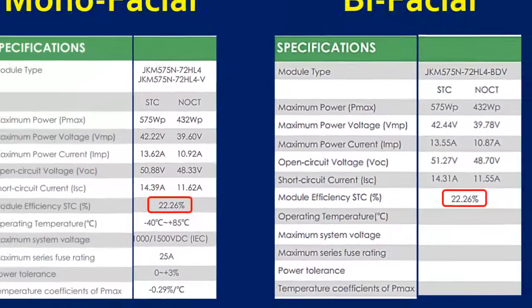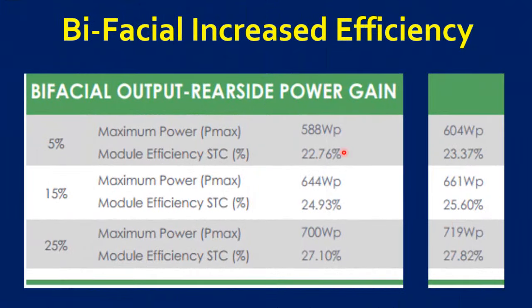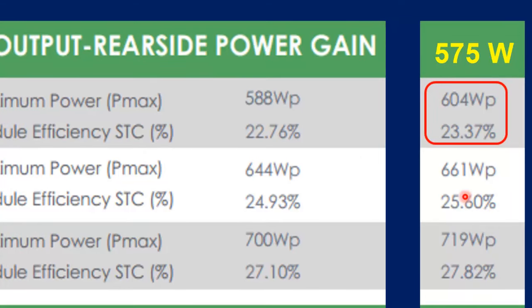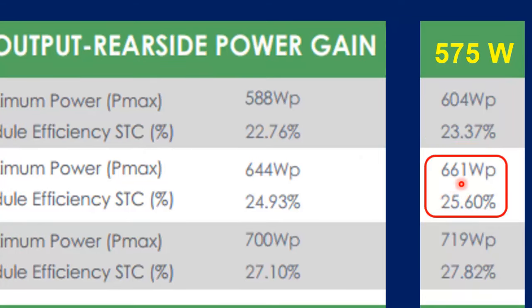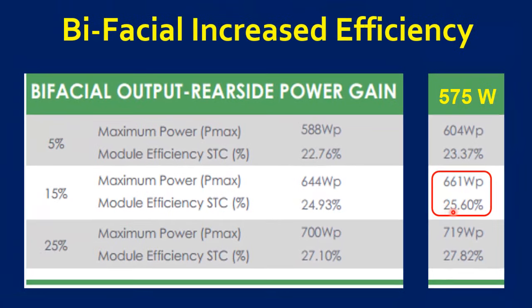So where does the difference lie? Continuing to study the datasheet of the bifacial solar panel, we can see the parameter: bifacial rear-rise power gain. Due to its ability to absorb energy from both sides, it can generate extra power from 5% to 25% depending upon the type of reflective surface. The same 575 Watt panel can produce 604 Watt with 5% increased efficiency, and if the reflective surface is better, it can generate 661 Watt with 15% increased efficiency.